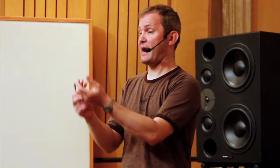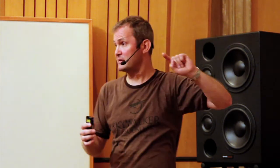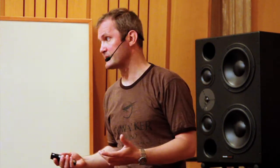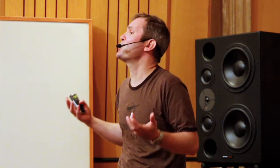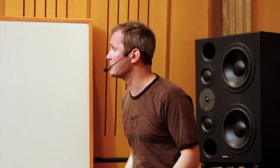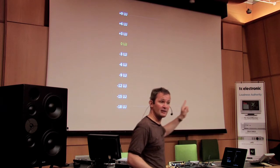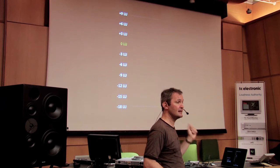Video editors with a very dynamic interview and a highly compressed music will now see on the meter that the compressed music is 10 LU too loud, whereas the peak level would be the same. I've always had this experience where I get stuff from the edit room and music after a dynamic interview is just way too loud. They say they leveled it to zero. But now if they level it to zero on a loudness meter, it's going to be fine — they have a meter where they actually see what they should hear.